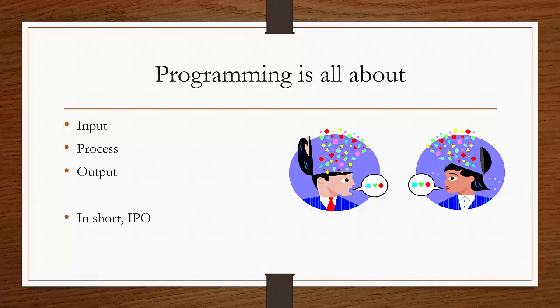Starting with the idea of why do we write a program? The program has three main components. It has an input, it has a process, and it has an output. In short called IPO.